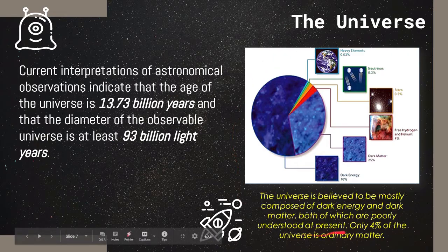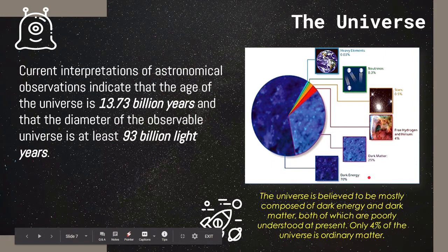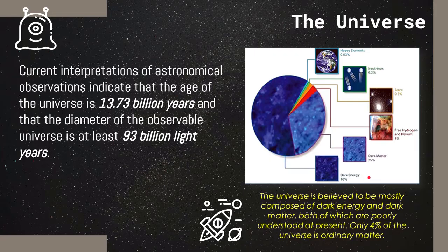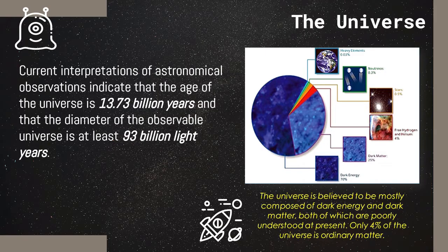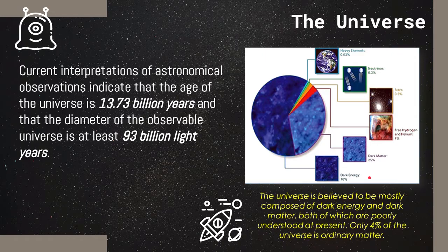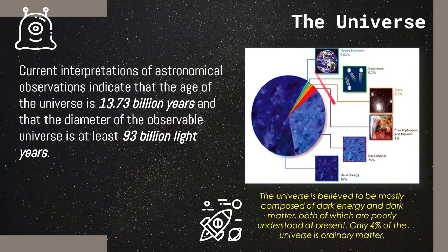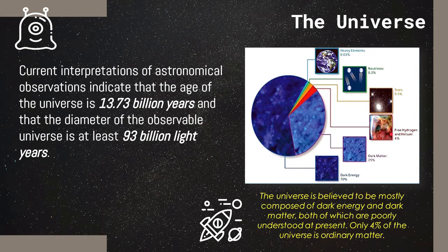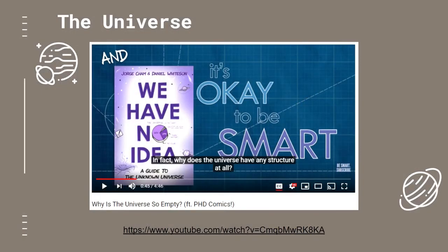The universe is believed to be mostly made up of dark energy and matter, around 70% for dark energy and 25% for dark matter. They are called dark because they do not interact with any electromagnetic fields and it makes them difficult to be observed. They are also poorly understood, but we are still constantly researching about them. Only 4% of the entire universe is made up of ordinary matter, the matter we know which are made up of atoms and molecules. I also recommend that you watch this video from It's Okay to be Smart entitled, Why is the Universe so Empty? I will provide the link in the description below.